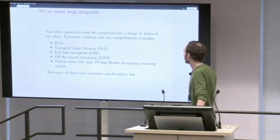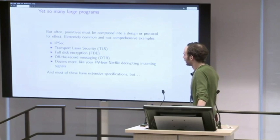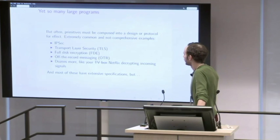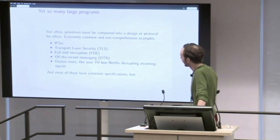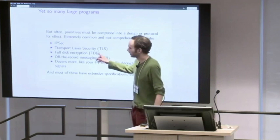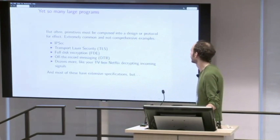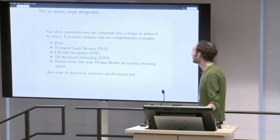All of these use an assortment of that technology. IPsec uses signing, authentication, and encryption. OTR uses almost a full gamut: hashing, signatures, authenticators, elliptic curves. Full disk encryption is interesting because it just uses encryption — there's not really a good theory for authentication on disk, which is a little bit unfortunate. But needless to say, it's all over the place.